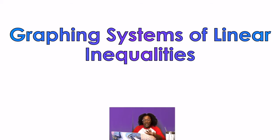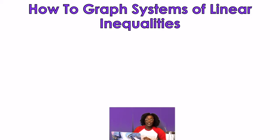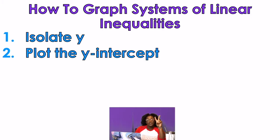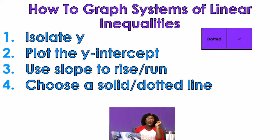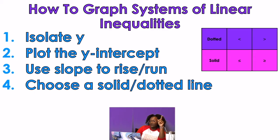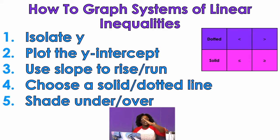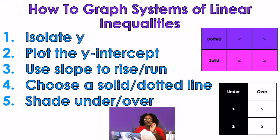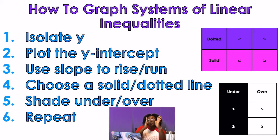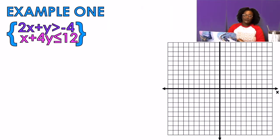How to graph a system of linear inequalities: one, isolate y; two, plot the y-intercept; three, use the rise over run; four, choose a solid or dotted line — dotted if it's greater than or less than, solid if it's less than or equal to or greater than or equal to; five, shade under or over — pretend the line is a table, under is less than or less than or equal to, over is greater than or greater than or equal to; then repeat for the second line.